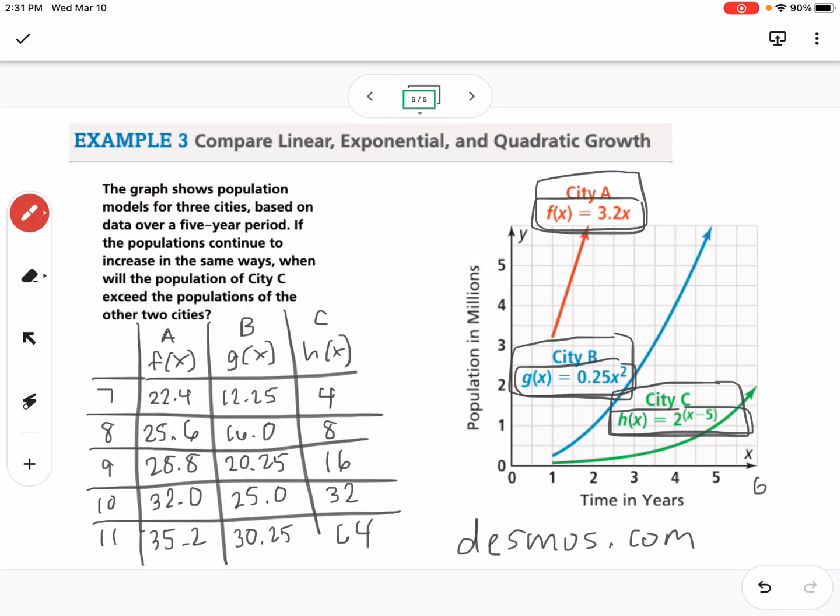So we're looking for where does city C overtake the other two? So where does it exceed the other two? So you can see here at year 10, city C is equivalent to city A, but it's beating city B. And so we could say after 10 years, because then at 11 years, you can see that clearly 64 is well over 35.2. So city C after 10 years is going to be greater than the other two cities.